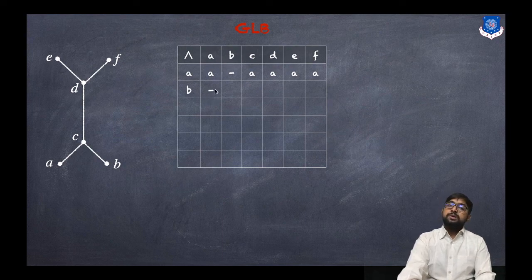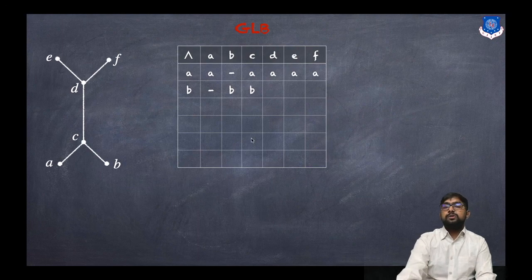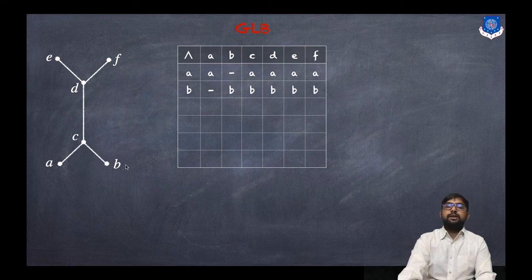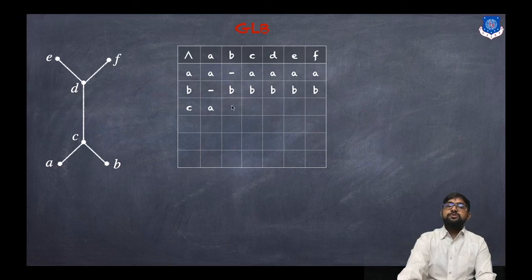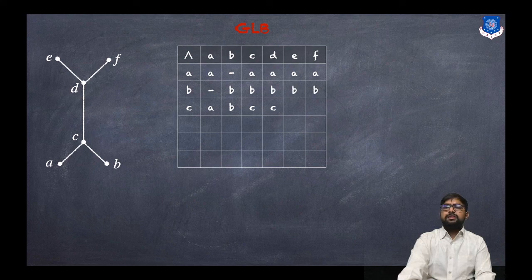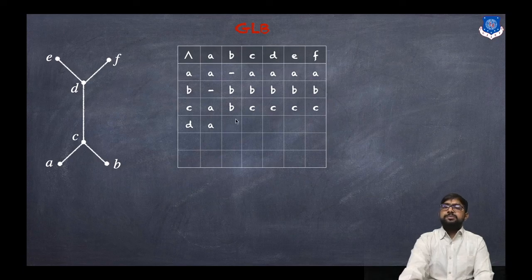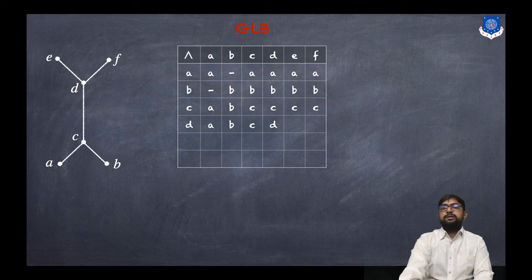For row b: GLB(b, a) = dash (same as GLB(a, b)); GLB(b, b) = b; GLB(b, c) = b; GLB(b, d) = b; GLB(b, e) = b. For row c: GLB(c, a) = a; GLB(c, b) = b; GLB(c, c) = c; GLB(c, d) = c; GLB(c, f) = c. For row d: GLB(d, a) = a; GLB(d, b) = b; GLB(d, c) = c; GLB(d, d) = d; GLB(d, e) = d; GLB(d, f) = d.